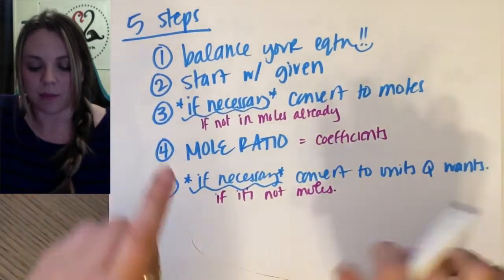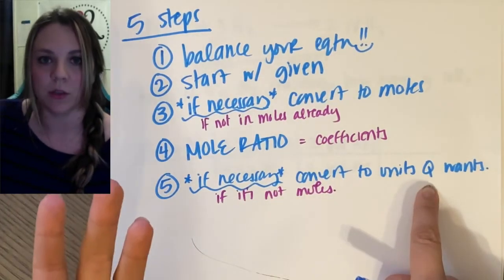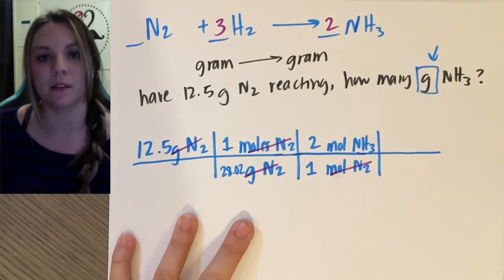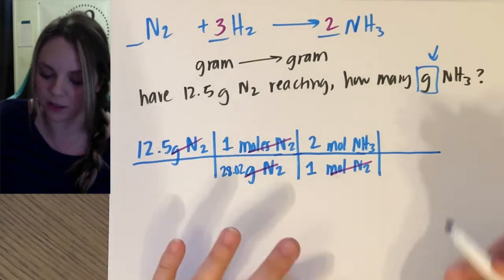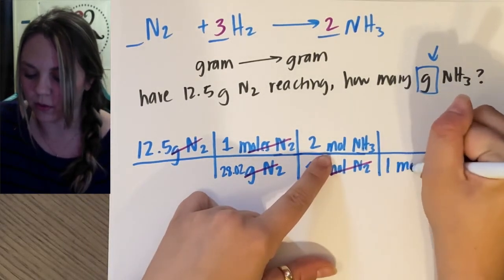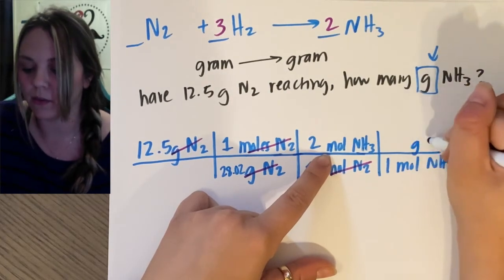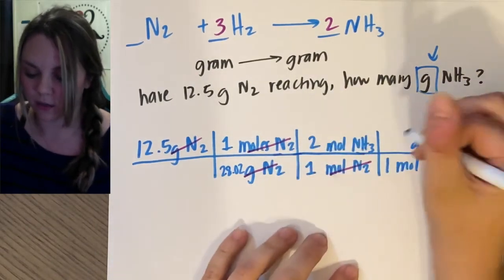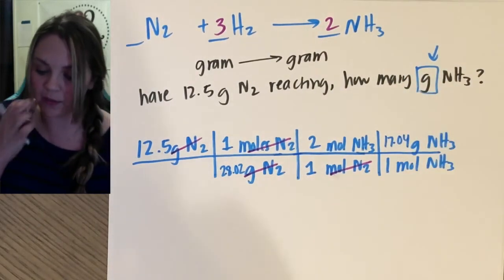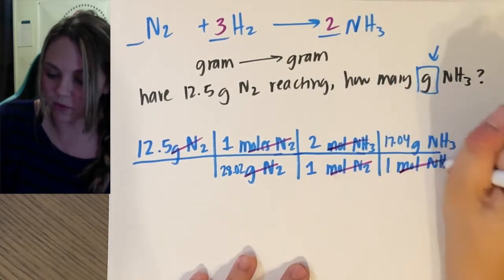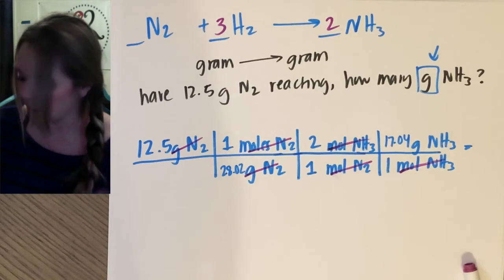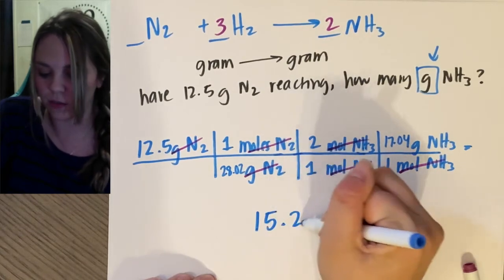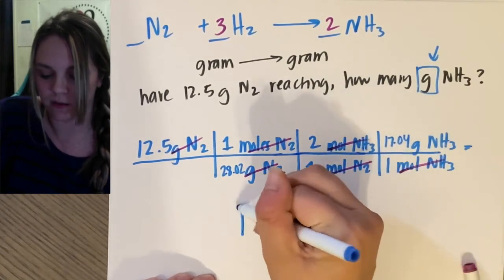And last step, if necessary convert units to whatever the question wants. In this case, my question is asking for grams. How many grams of NH3 do I make? So get out of moles, one mole of NH3 is going to be some amount of grams of NH3. Mole to gram, use your molar mass. 14, 14, 17.04 grams. Moles and moles cancel. Congrats, I'm going to figure out my amount of grams. And I in my calculator, did I already solve it? I did. And you get 15.2 grams of NH3.